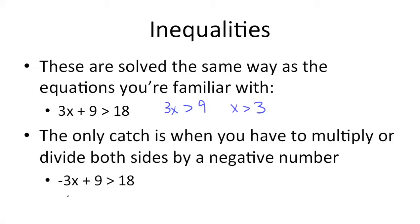So for example, here we have negative 3x plus 9 is greater than 18. Isolate the variable like we did in the last problem. Subtract 9 from both sides. And now to isolate x, we need to divide by negative 3, which means we need to flip the sign. So we get x is less than negative 3.